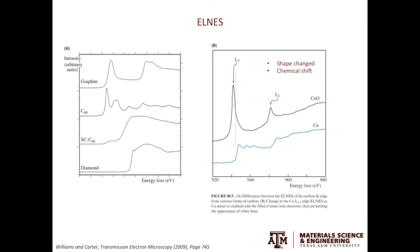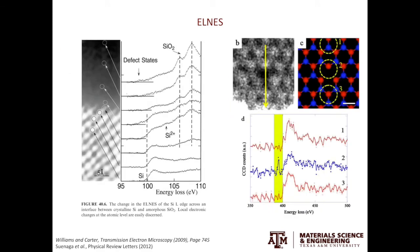It is very powerful to combine ELNES with STEM, especially atomic level STEM. The example on the left was taken from the textbook and originally done by Professor Phil Batten. Down here is silicon, up here is silicon oxide. If you draw a line from silicon into silicon oxide, you will see the change from silicon to silicon 2+ in the ELNES. The example on the right is defect analysis using EELS on a 2D material. The work was done by Sue and Naga and co-authors, published in Physical Review Letters in 2012. The material here is boron nitride, and the areas labeled number 1 and number 3 are pristine areas with no defects. At site number 2, you can see a point defect — a vacancy.